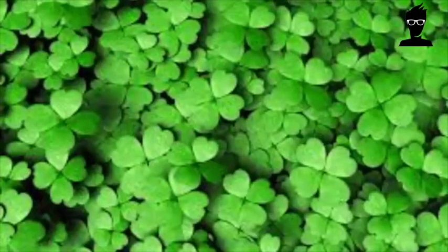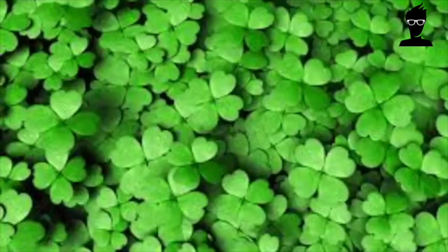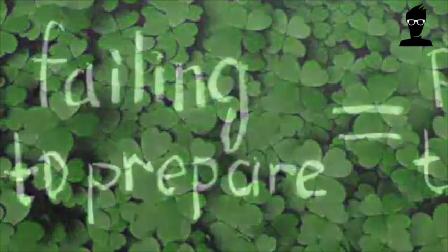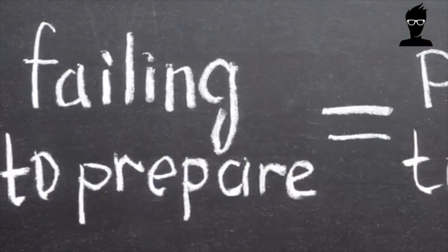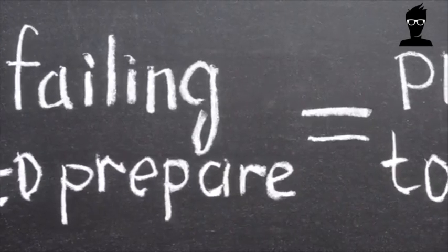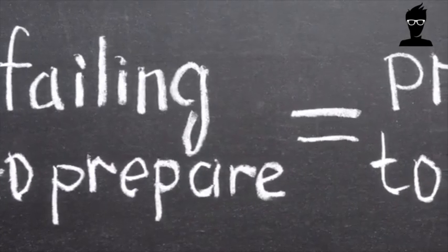E.B. White said habitually creative people are prepared to be lucky. The key words are prepared and lucky. They're inseparable. You don't get lucky without preparation, and there's no sense in being prepared if you're not open to the possibility of a glorious incident.